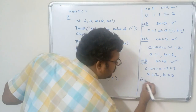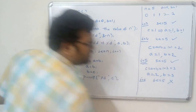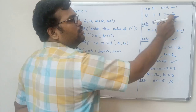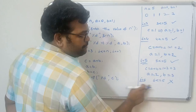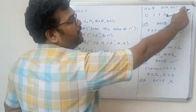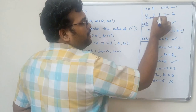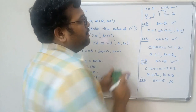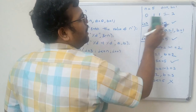Next i becomes 6. 6 less than or equal to 5 fails, so we exit the loop. The output for n equal to 5 is: 0, 1, 1, 2, 3. If n were 6, c equal to a plus b gives 2 plus 3 equal to 5, so 5 would also be printed, giving the sequence 0, 1, 1, 2, 3, with the next being 5.